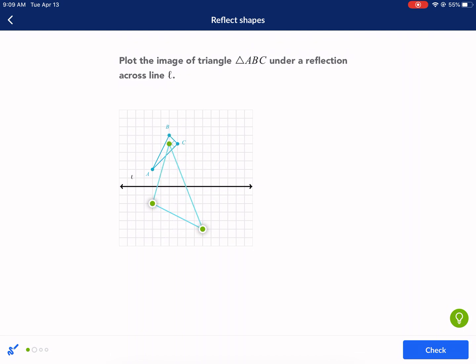B is one, two, three, four, five, six units down to the line. So I need to continue that one, two, three, four, five, six units across the line of reflection to arrive at its point of reflection.